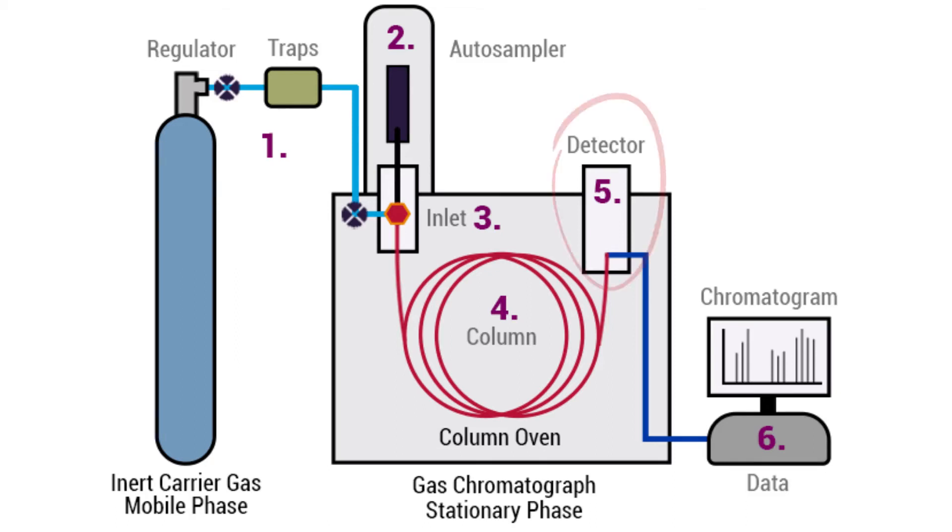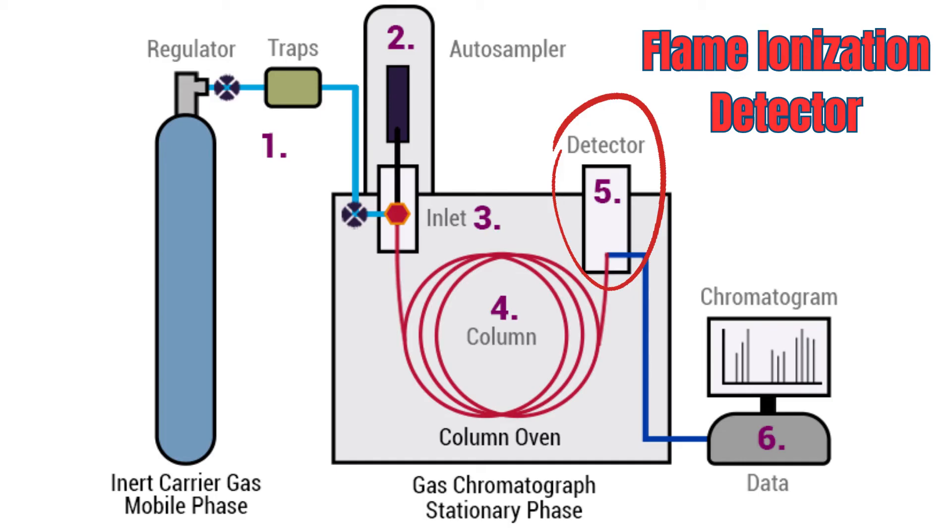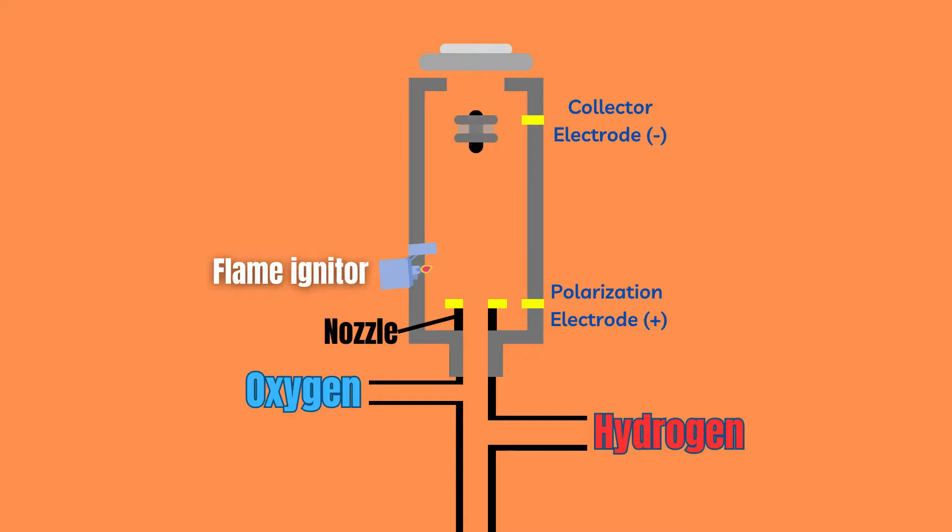A flame ionization detector is one of the possible detectors used in gas chromatography. It consists of the end part of the column, a hydrogen and oxygen inlet, a flame igniter, a nozzle, and finally two electrodes.